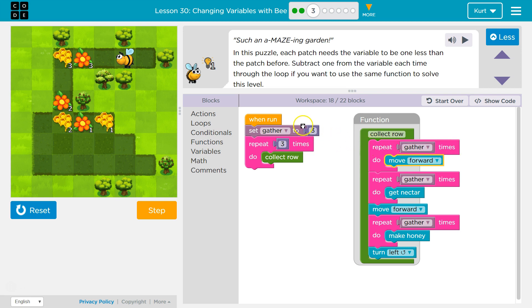Repeat 3 times, move forward once, twice, 3 times. Yep, and now we should be done with that and drop down and repeat 3 times, get nectar 3 times. 1, 2, 3. Got it.